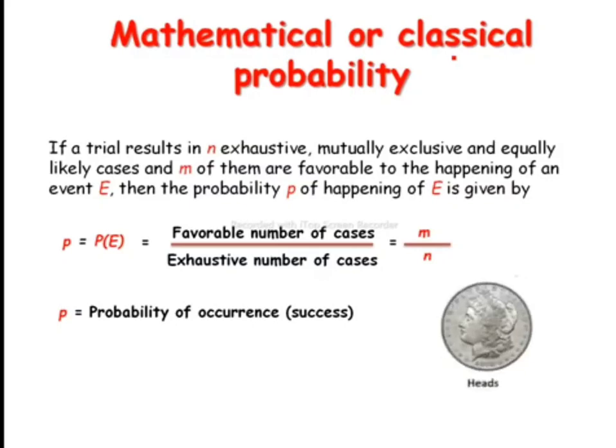You are tossing a coin and if head occurs means that will be success. And Q is the probability of non-occurrence, that is failure, that is if head is not occurring.